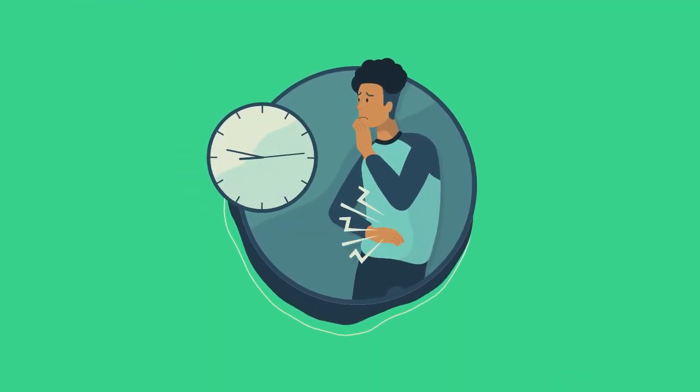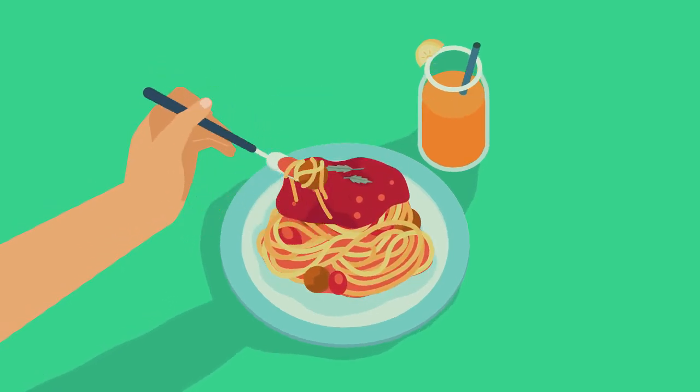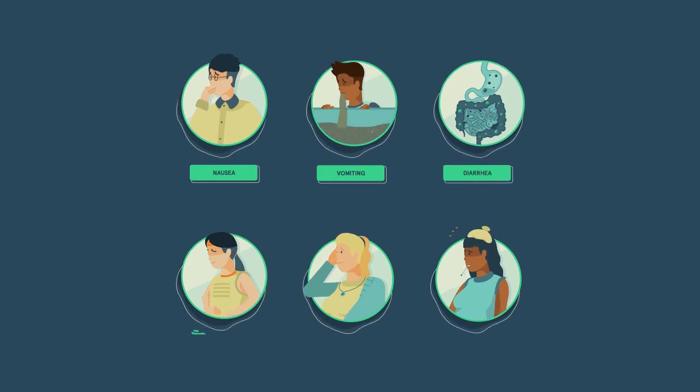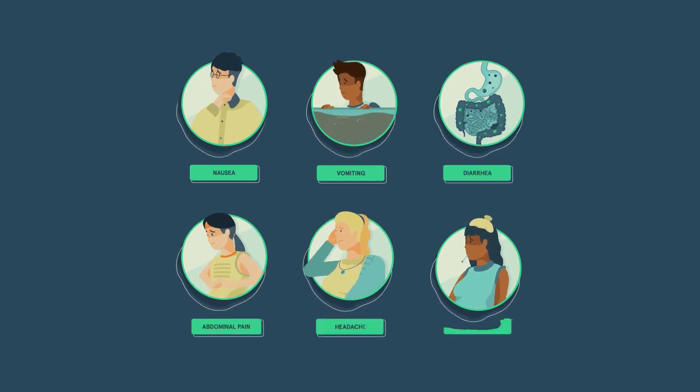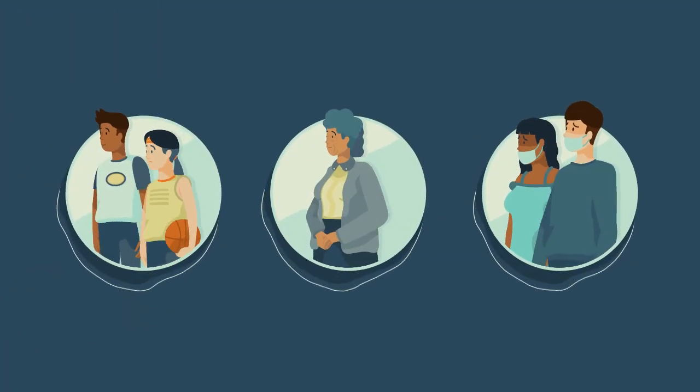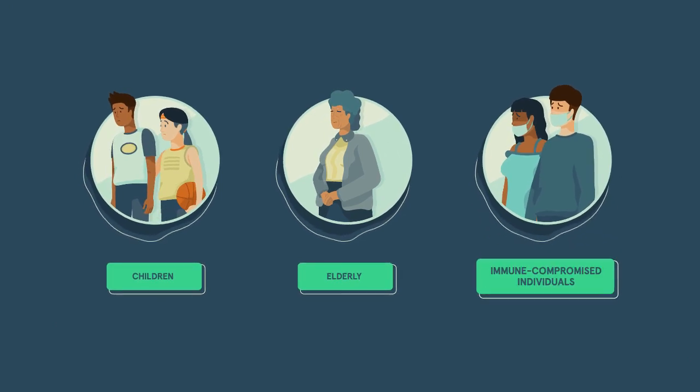Norovirus infects humans through person-to-person transmission or contamination of food or water. Norovirus illness usually develops 24 to 48 hours after ingestion of contaminated food or water. Symptoms include nausea, vomiting, diarrhea, abdominal pain, headache, and fever. Symptoms last one to two days. However, norovirus can become quite serious in children, the elderly, and immune-compromised individuals.